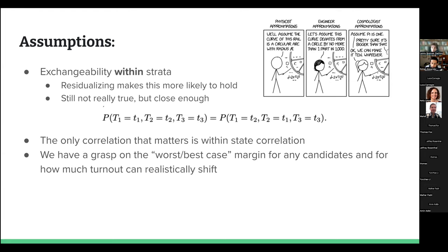I'd say there are three major assumptions, though I guarantee I haven't thought this through as thoroughly as I should have, and there are definitely more. The first, most important assumption is that within each stratum — within urban, suburban, and rural counties — our data is exchangeable. Exchangeability means the order in which you see those counties is essentially random. Within the set of rural counties the order is random, within suburban counties the order is random, within urban counties the order is random.